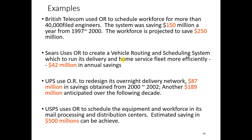British Telecom used OR to schedule work, saving $150 million between 1997 and 2000, with projected savings of $250 million going forward. A logistics company used OR for vehicle routing and scheduling, saving $42 million. UPS used OR to redesign its overnight delivery network, achieving significant savings. These examples demonstrate how OR can minimize project costs or maximize company profits.